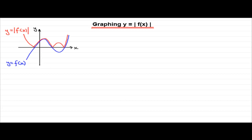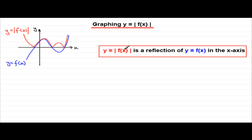Essentially, if you have a graph of the form y equals f(x), then y equals the mod of f(x) is obtained by taking a reflection of any below-axis portions of y equals f(x) in the x-axis.